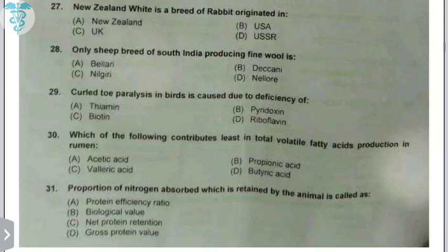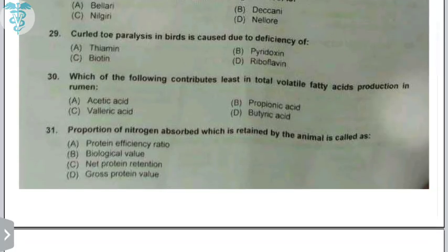Curled toe paralysis in poultry is due to deficiency of vitamin B2 — riboflavin. The VFA which contributes least to total VFA percentage production in the rumen is valeric acid. Valeric acid, isobutyric acid, and similar VFAs are produced in very small quantities in the rumen.